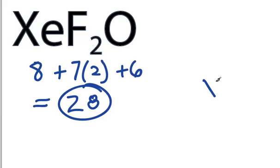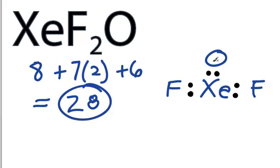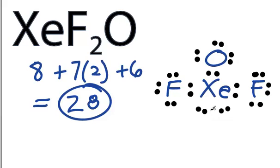We'll put Xenon in the center, it's the least electronegative, and let's put a Fluorine on either side and then an Oxygen. We'll put two electrons between each bond, we'll use six, then around the outer atoms: eight, 10, 12, 14, 16, 18, 20, 22, 24. We have four left.